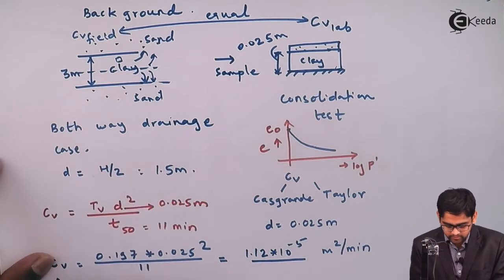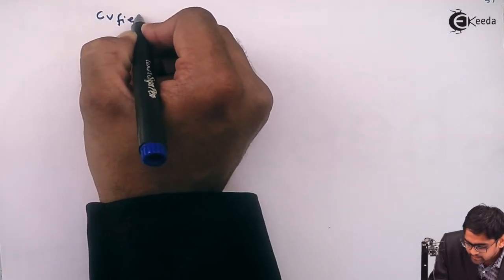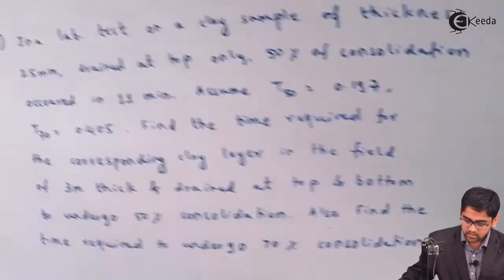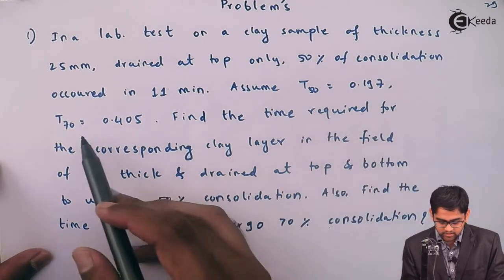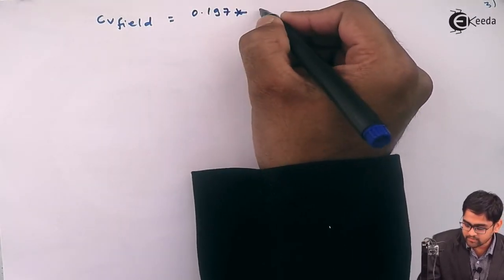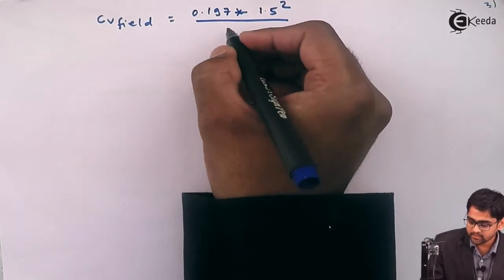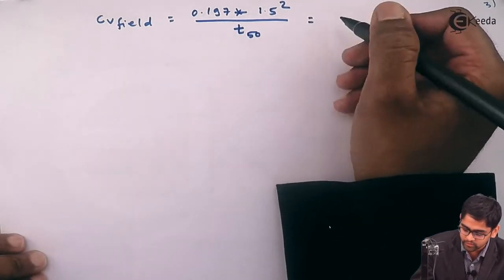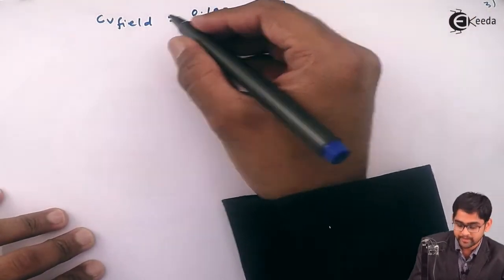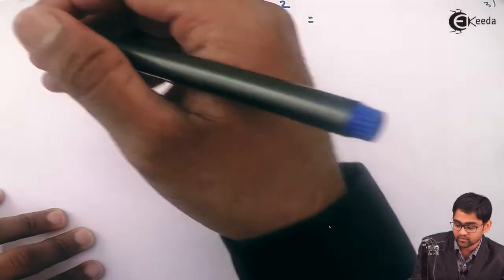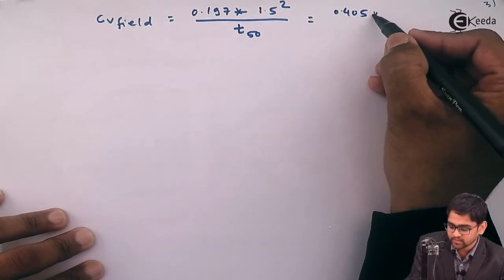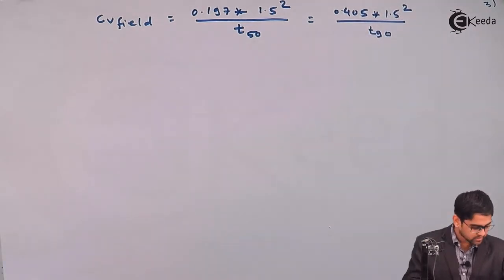Once we know the C-V value from the lab, it remains the same for the field. So C-V in the field equals 1.12 × 10⁻⁵ m²/min. Using C-V equals T-V times D² divided by T, for 50% consolidation: T-V (0.197) × 1.5² divided by T-50. For 70% consolidation: C-V equals T-V (0.405) × 1.5² divided by T-70. We need to find both T-50 and T-70 in the field.